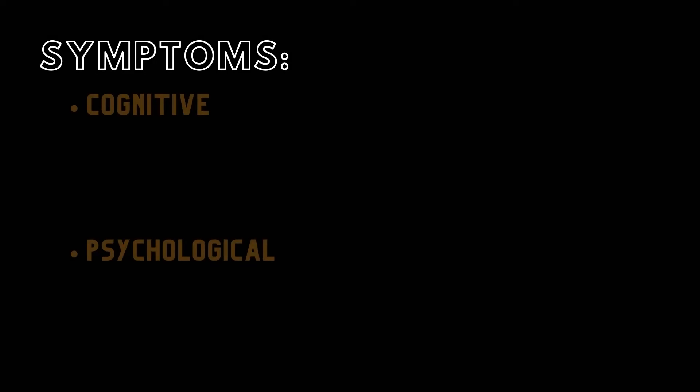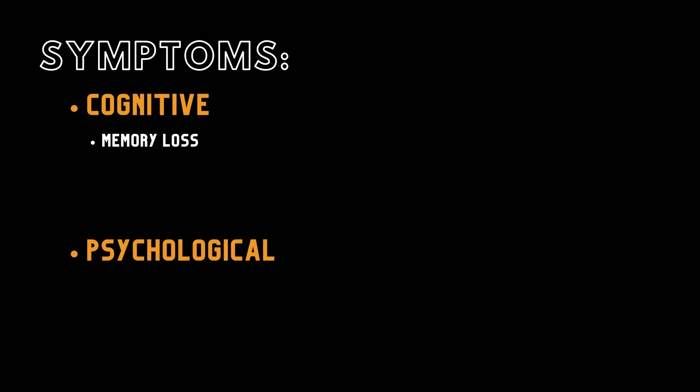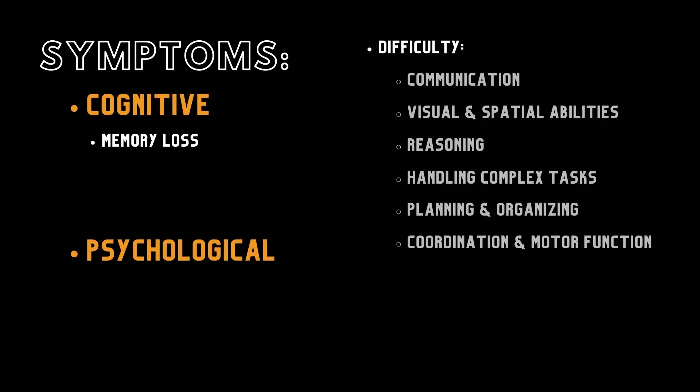Symptoms for dementia are both cognitive and psychological. Cognitive symptoms include memory loss and difficulty in the following: communication, visual and spatial abilities, reasoning, handling complex tasks, planning and organizing, and coordination and motor function. Another symptom is confusion and disorientation.